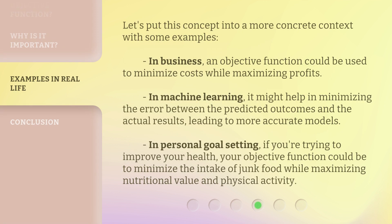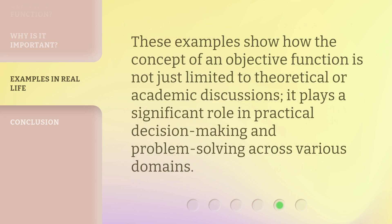Let's put this concept into a more concrete context with some examples. In business, an objective function could be used to minimize costs while maximizing profits. In machine learning, it might help in minimizing the error between the predicted outcomes and the actual results, leading to more accurate models. In personal goal setting, if you're trying to improve your health, your objective function could be to minimize the intake of junk food while maximizing nutritional value and physical activity. These examples show how the concept of an objective function is not just limited to theoretical or academic decisions — it plays a significant role in practical decision-making and problem-solving across various domains.